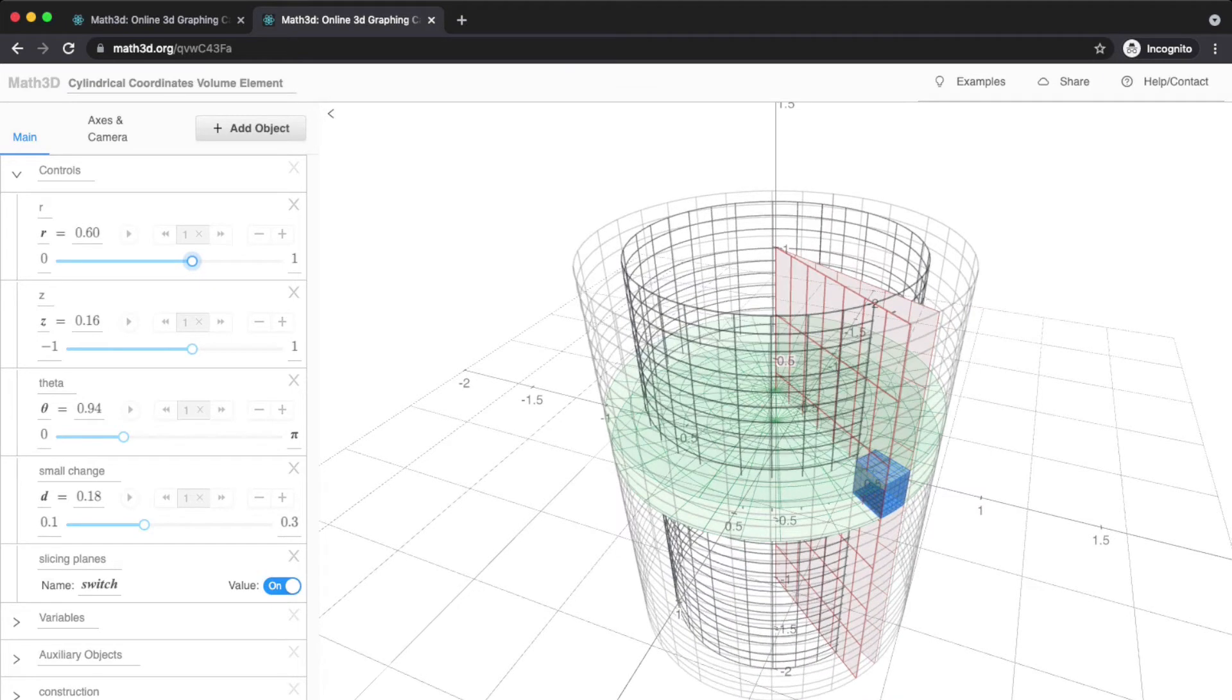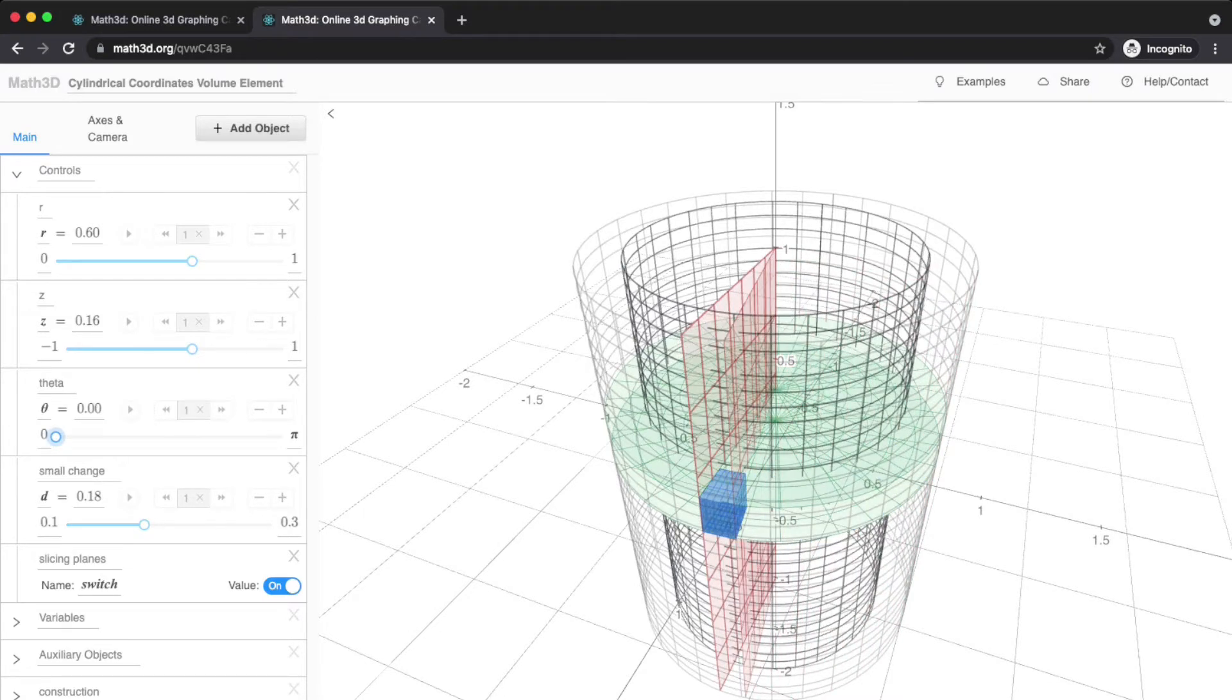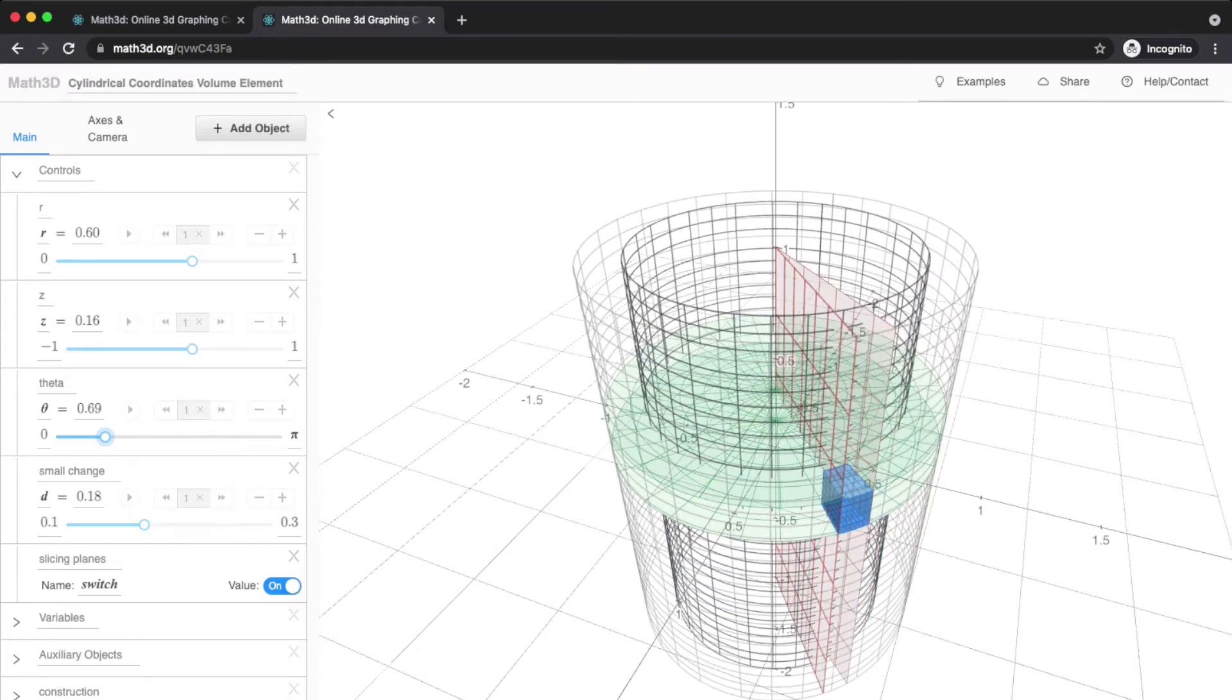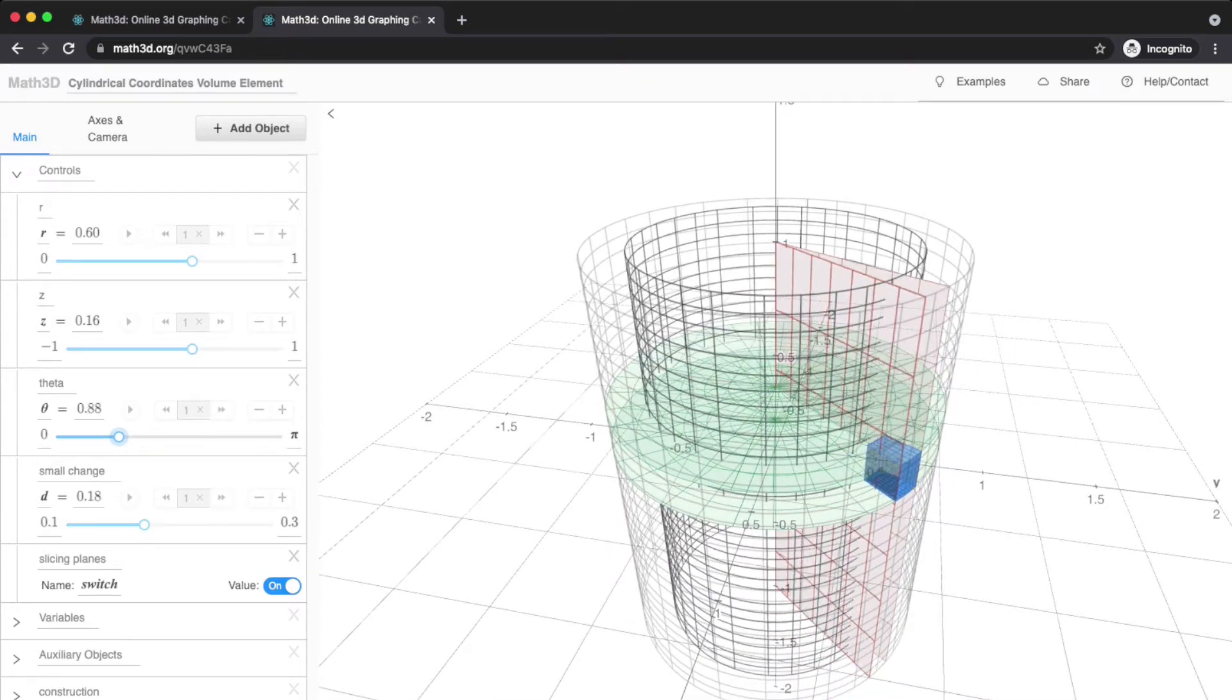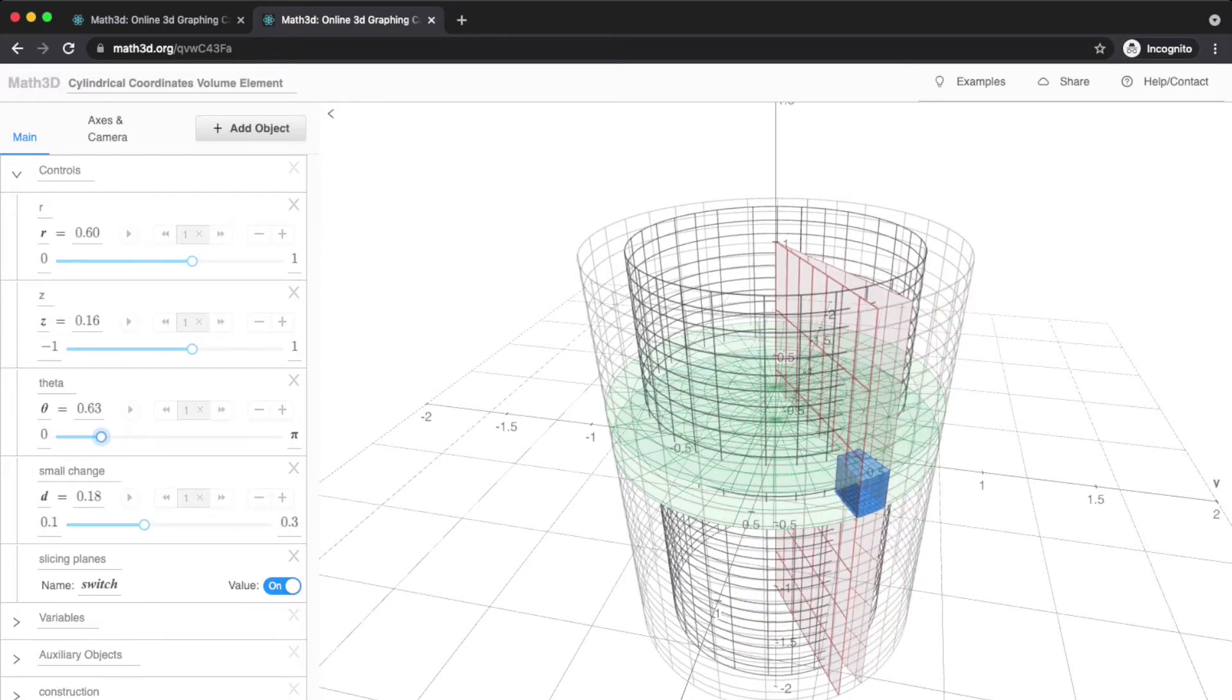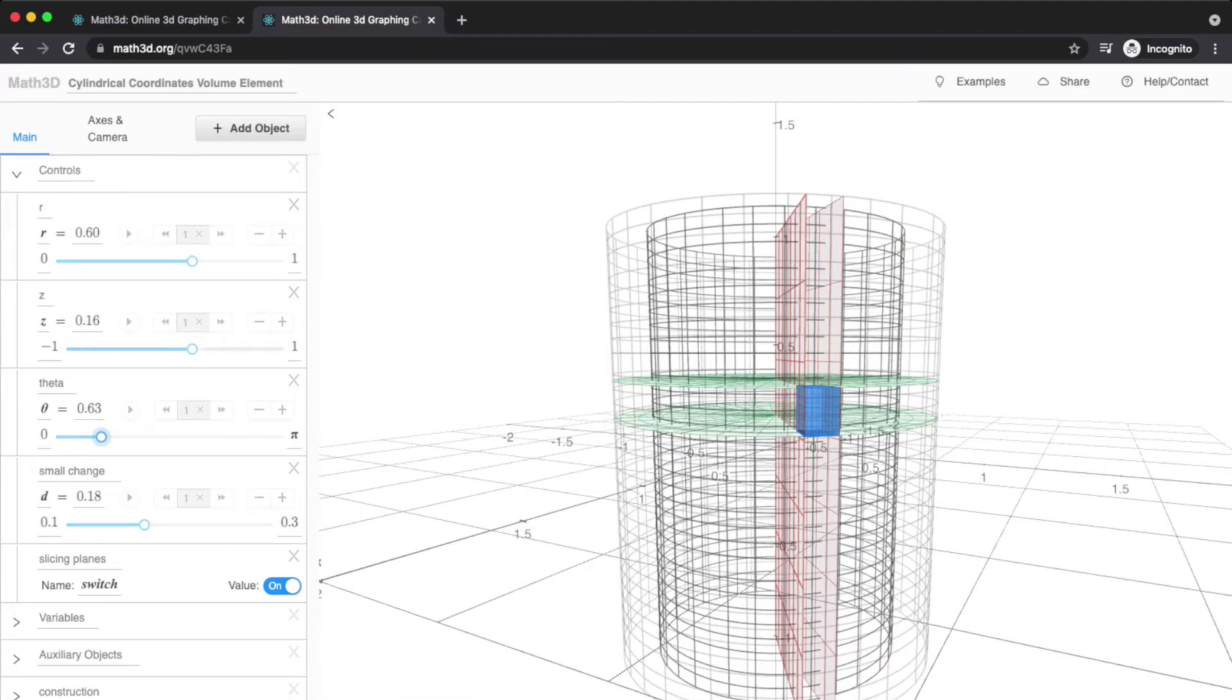The volume depends on R. As R gets smaller, that blue region gets smaller. As R gets bigger, that blue volume gets bigger. Will it depend on theta? No, as theta changes, that region does not change at all. It depends on the change in theta, the angle between these two red planes. It doesn't depend on Z, but it does depend on its Z thickness, that's DZ.